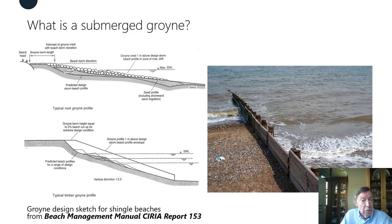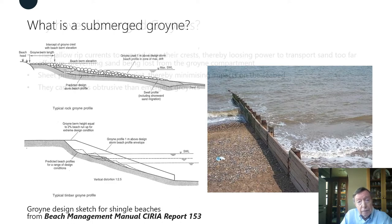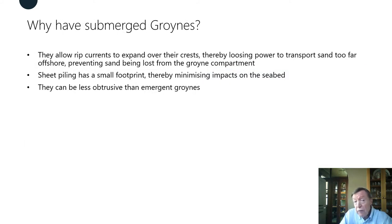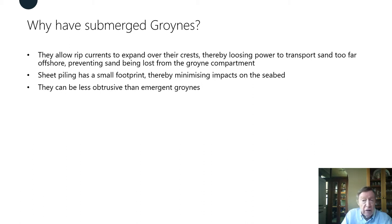So what are submerged groins? They are groins that extend far offshore but underwater, and they have been used quite a bit in the UK, mainly on shingle beaches. The main reason for using them is that they allow rip currents, which form along the sides of all groins, to expand over their crests, thereby losing their power to transport sand too far offshore, which prevents sand from being lost from the groin compartment.